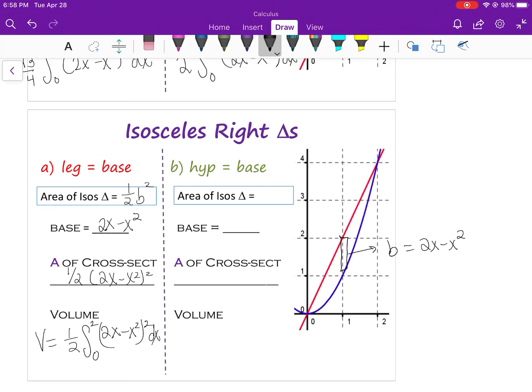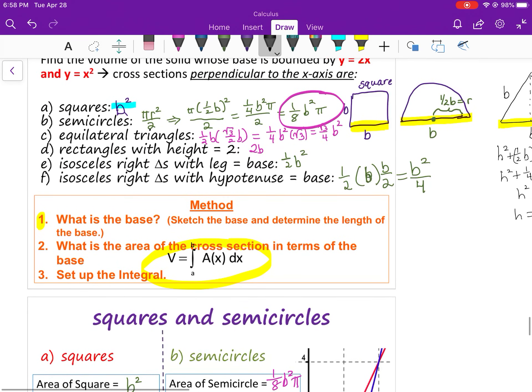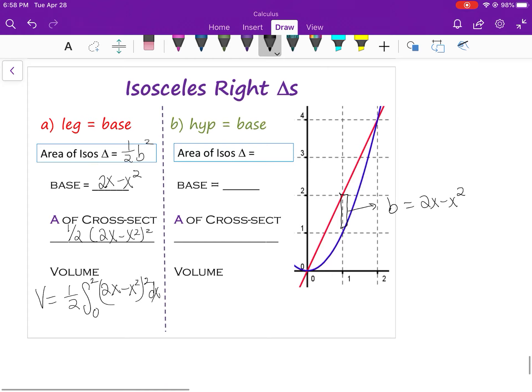And finally, our last formula was where the hypotenuse was the base. And that formula was B squared over four. So B squared over four. Okay, that should do it.